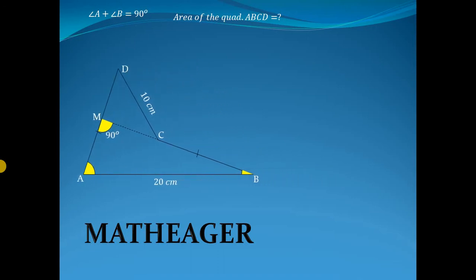So now the area of this quadrilateral is the area of this smallest right-angled triangle, which is half into DM into MC, plus the area of the larger triangle, which is the area of quadrilateral ABCD.